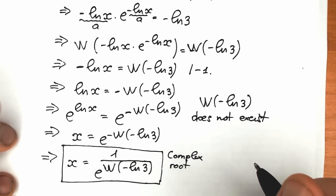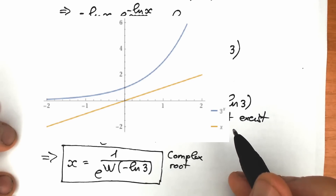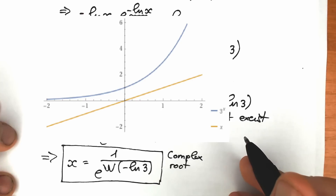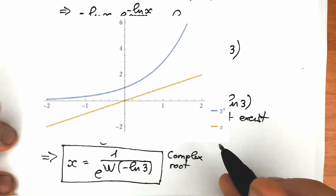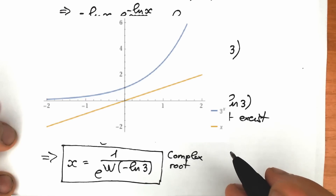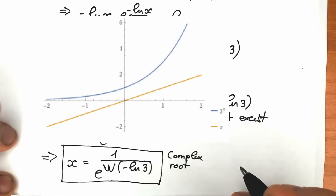For those interested in the plot: looking at the graph, we have two curves — the exponential function 3^x and the linear function y = x. As a result, there is no point of intersection, which proves that we have no real number roots for this equation.